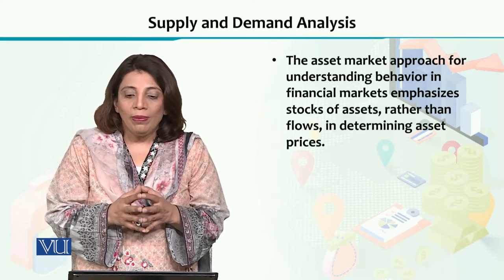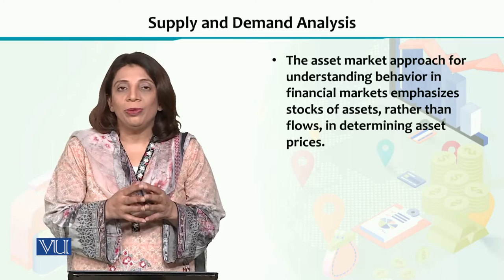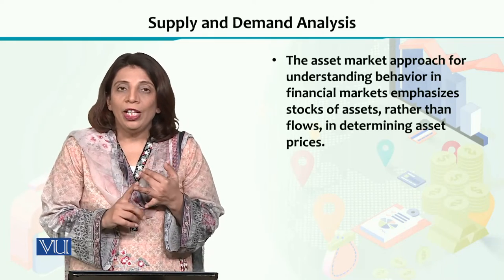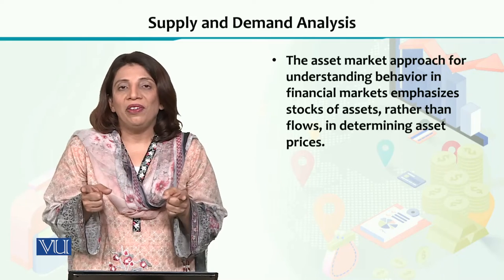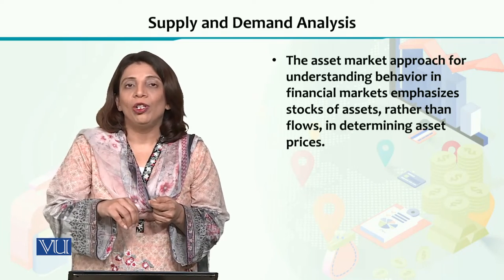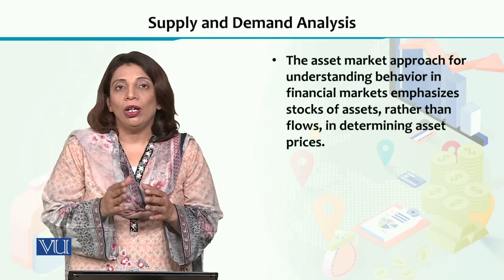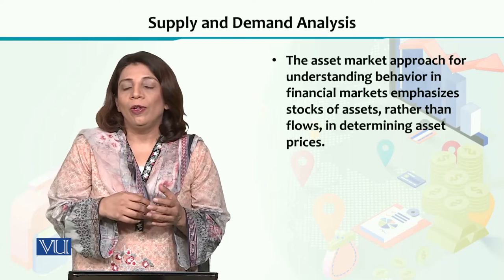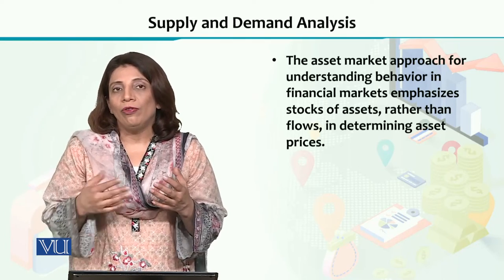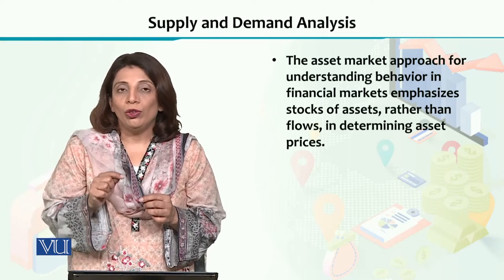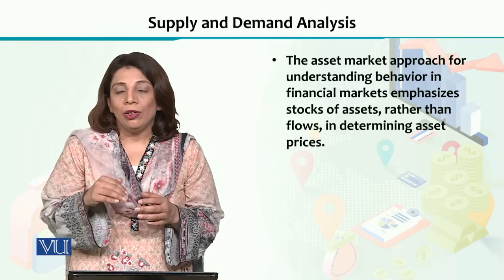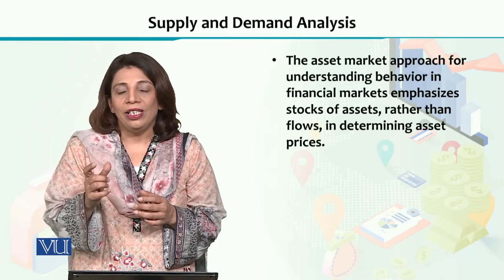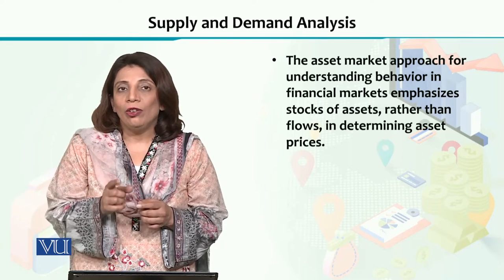If we follow the asset market approach, you have to consider one important thing: when we talk about financial assets, there are flow variables, which we measure over a period of time, and stock variables, which we measure at a point in time. When we talk about financial assets, we always calculate the stock variable. So whenever we are talking about the quantity demanded or quantity supplied of the bond market, or the equilibrium level of the bond market, we account for stock variables. Flow variables are technically quite difficult to use, so for simplicity, when we talk about financial assets, we use stock variables.